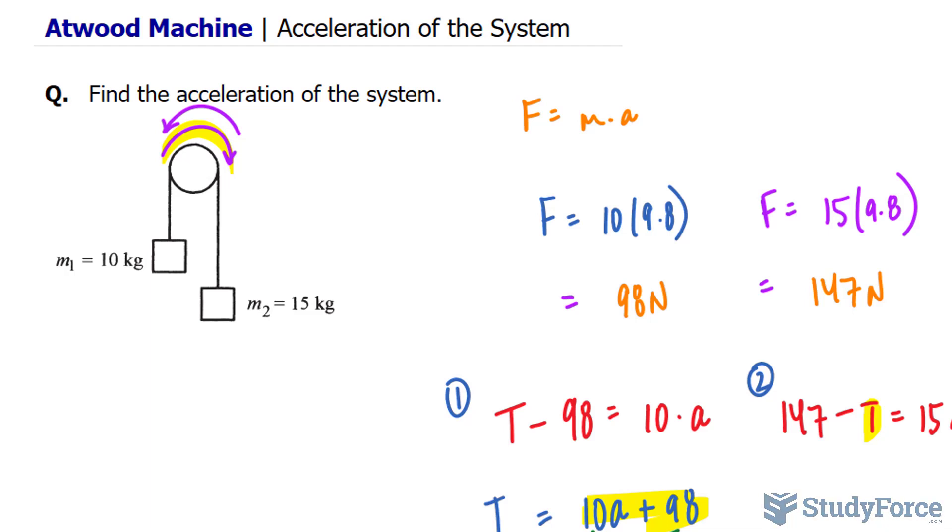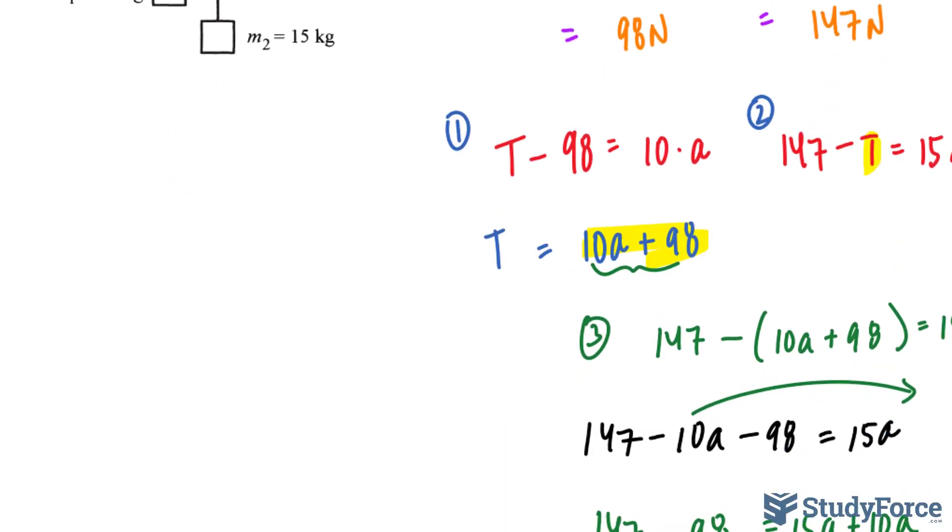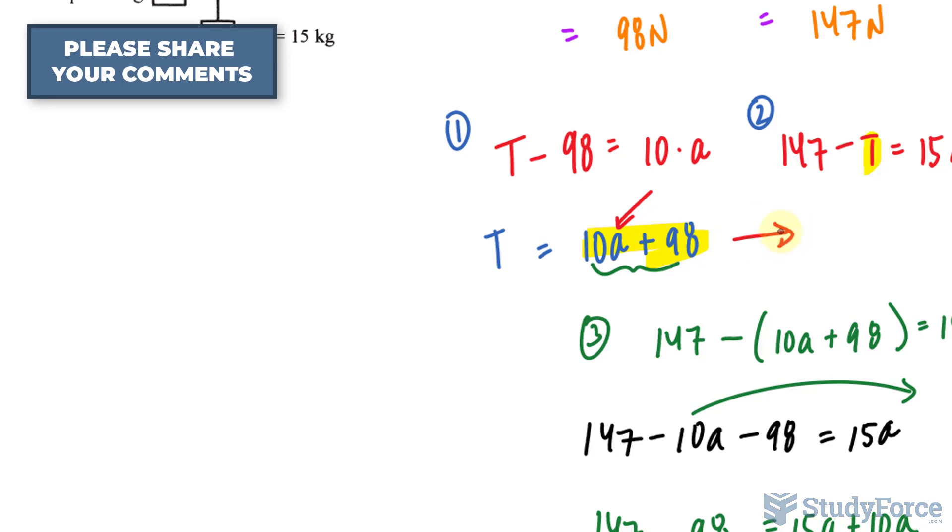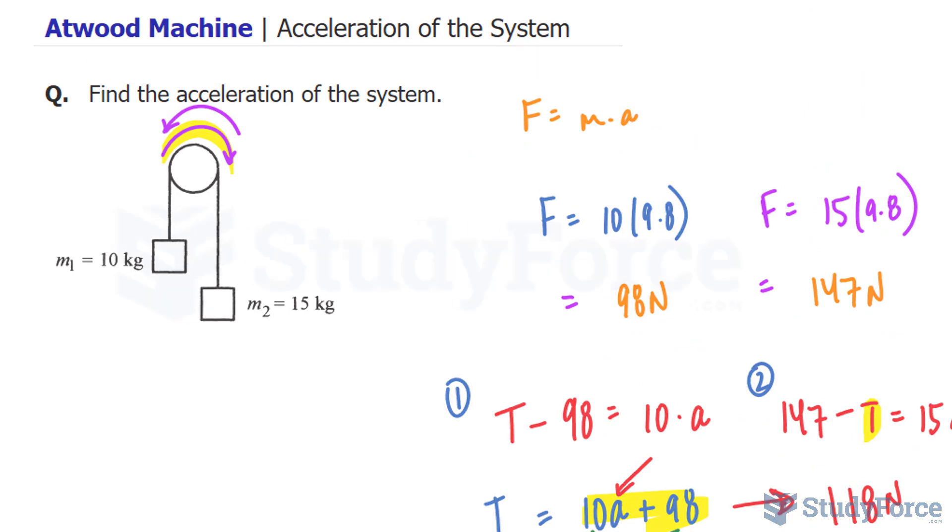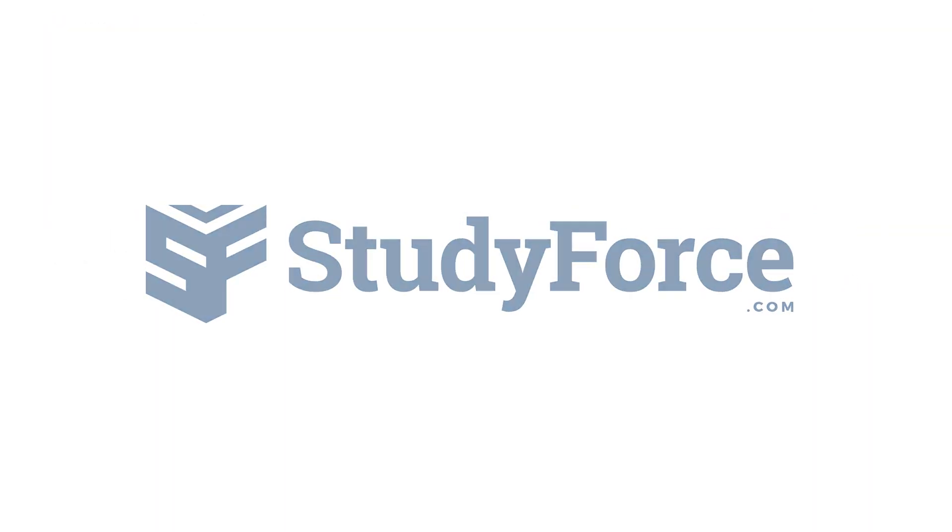At this point, you can go ahead and find the tension if you wanted to. Like I mentioned, you would throw that number into here, and you should end up with a value of around 118 newtons. And there you have it. Now you know how to solve an Atwood machine type physics problem.